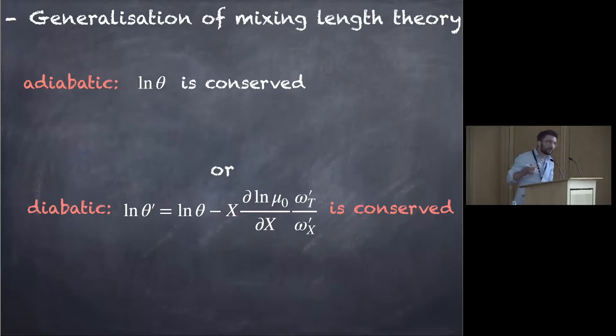To go further than that, to see if it could work in brown dwarf, we needed to generalize mixing length theory. And to do that, what we realize is that in the adiabatic case, what is conserved is entropy, the log of potential temperature.